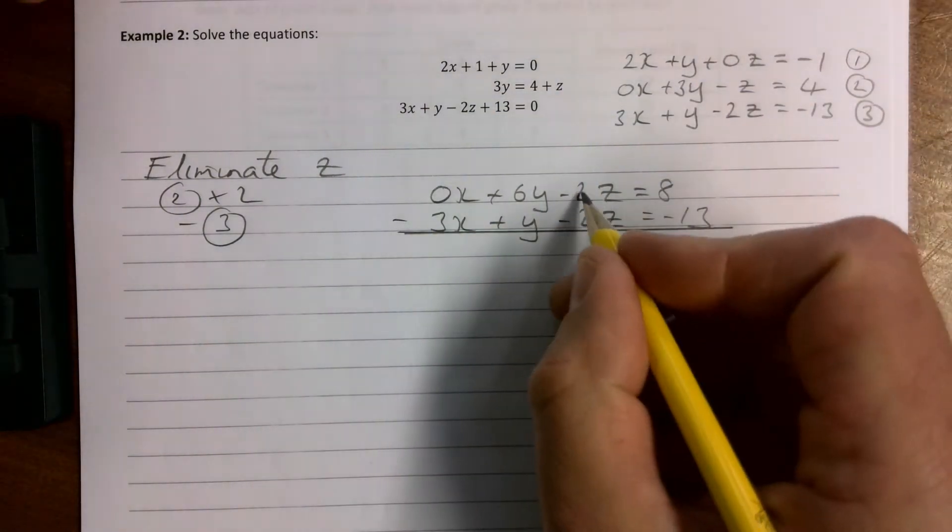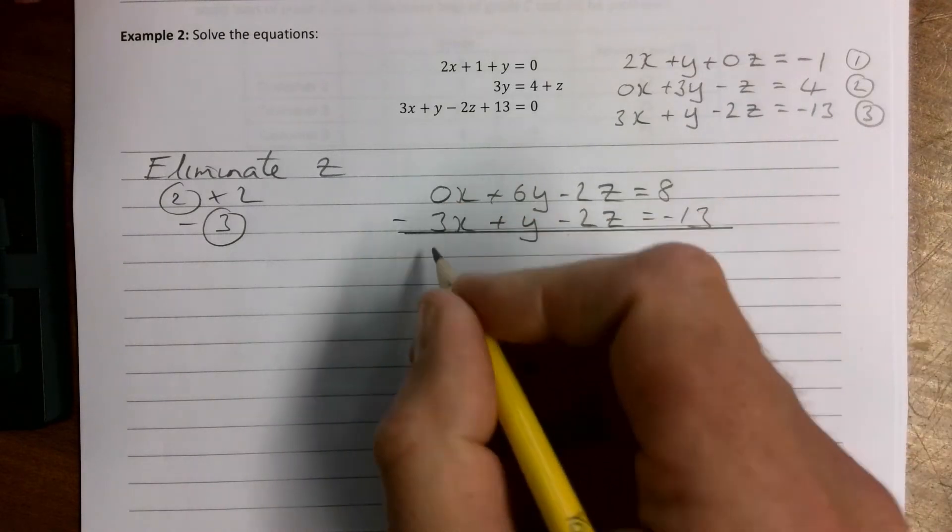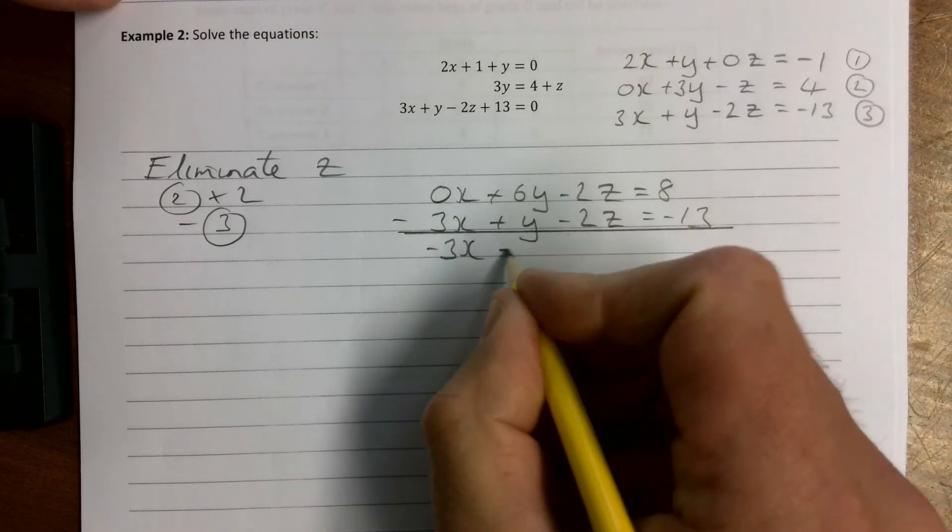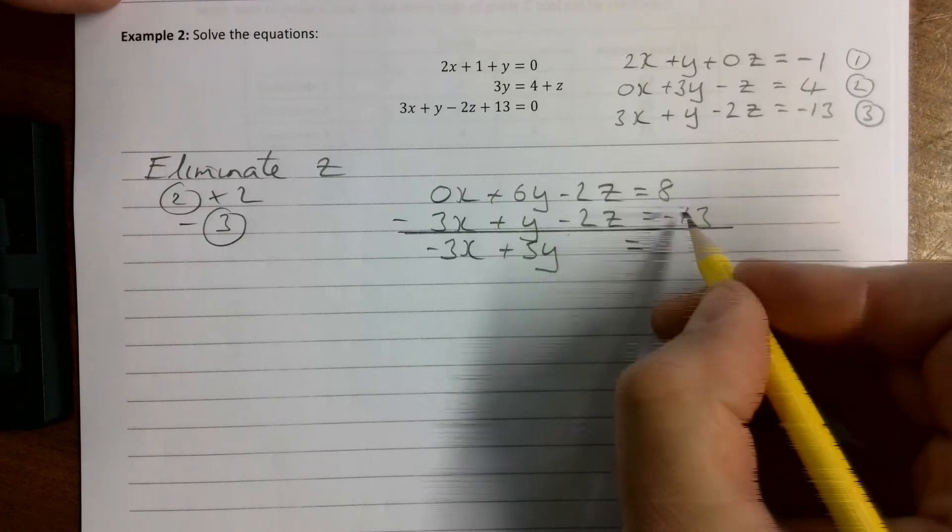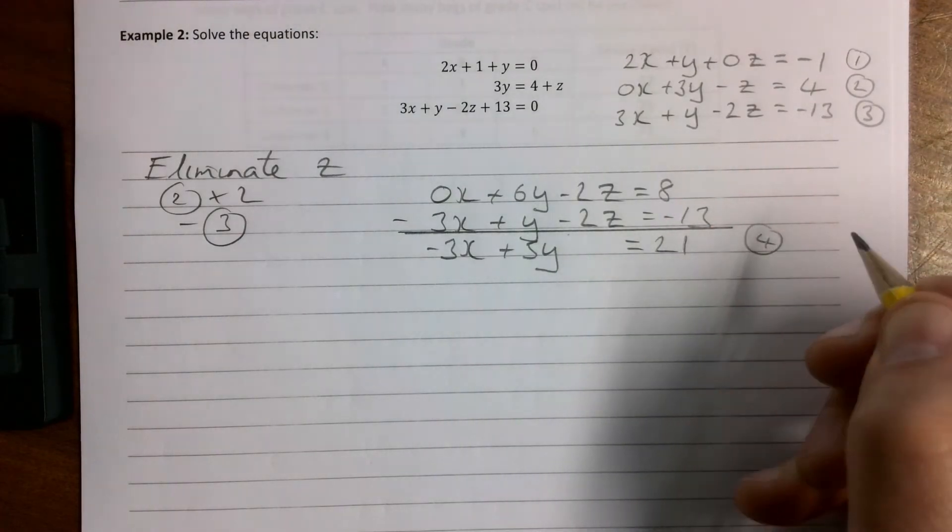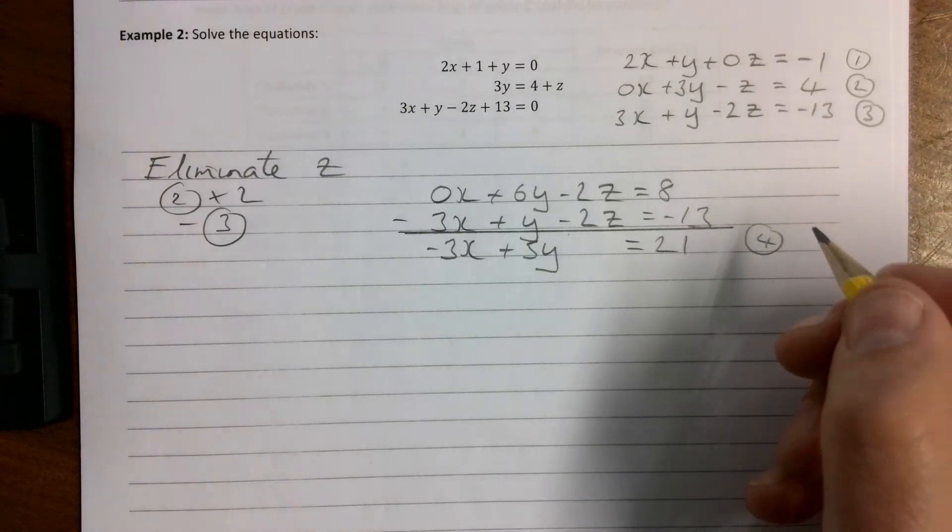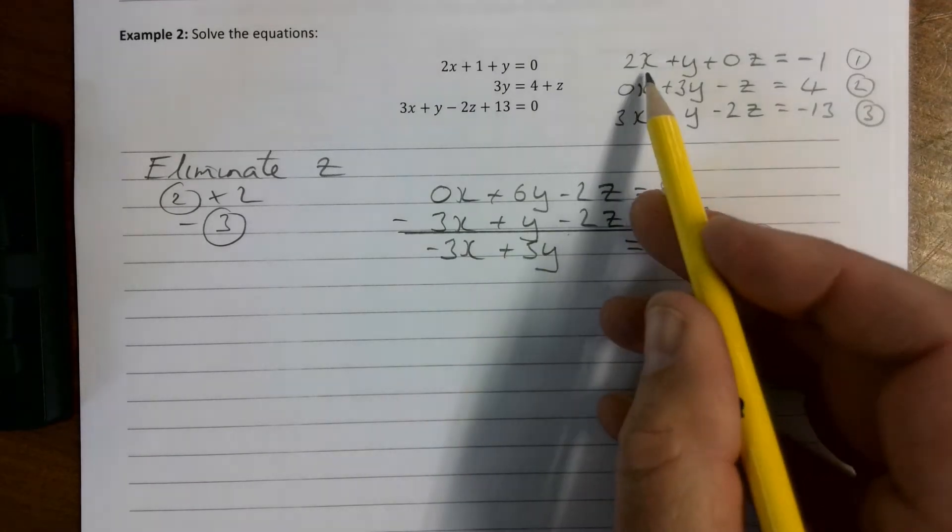We're going to subtract these to get rid of the z's. So we're going to go for this take away this, so that's minus 3x, this take away this gives plus 5y, this take away this disappears. Careful here, 8 minus minus 13 gives us 21, and that's going to be our equation 4.